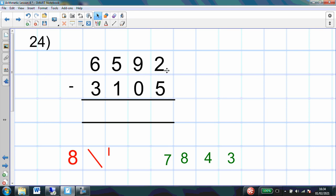That's right. If I haven't got enough 1's, I'm going to have to exchange 1 of my 10's. So I won't have 9 tens now. I'm going to have 8 tens. I'm going to exchange 1 of my 10's for 10 ones. So now I've actually got 12 ones.